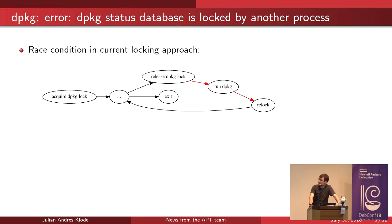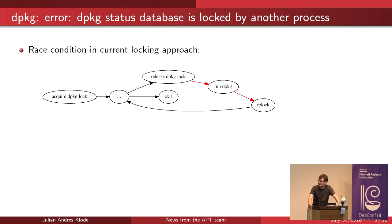The reason for that is that we currently have a race condition. When you run an apt install, apt first acquires the dpkg lock. Then before it executes dpkg, it has to release the lock. And after dpkg ends, it has to acquire the lock again. In these two windows — before dpkg acquires the lock and after dpkg releases it — the lock is lost, and another process can run and block us from running dpkg again.